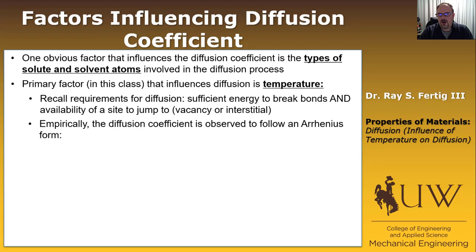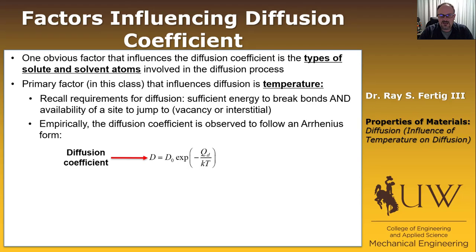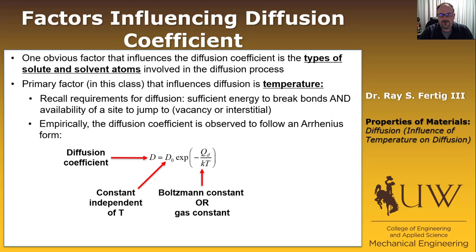This isn't a derived equation, but empirically we observe that the diffusion coefficient follows an Arrhenius form. The equation has D as the diffusion coefficient used in both Fick's first and second law. D-naught is a constant independent of temperature, and K is the Boltzmann constant — or we could use R as the gas constant, depending on the units of our activation energy.